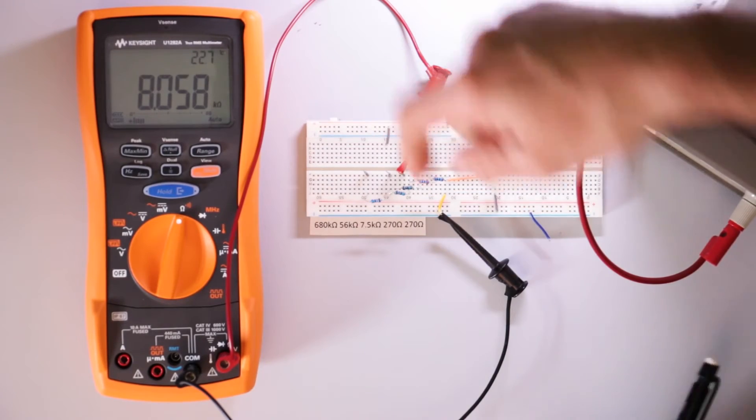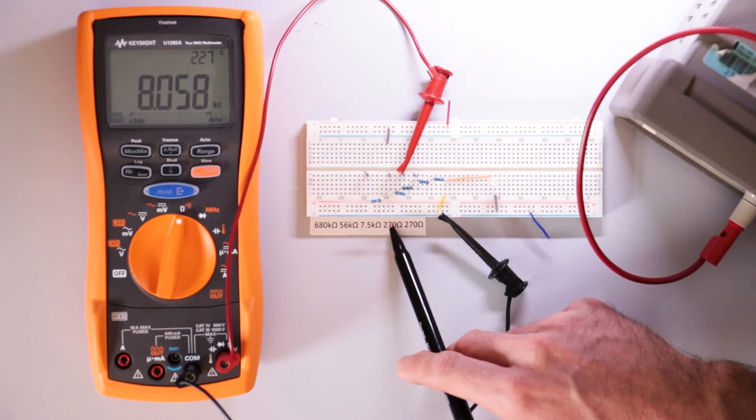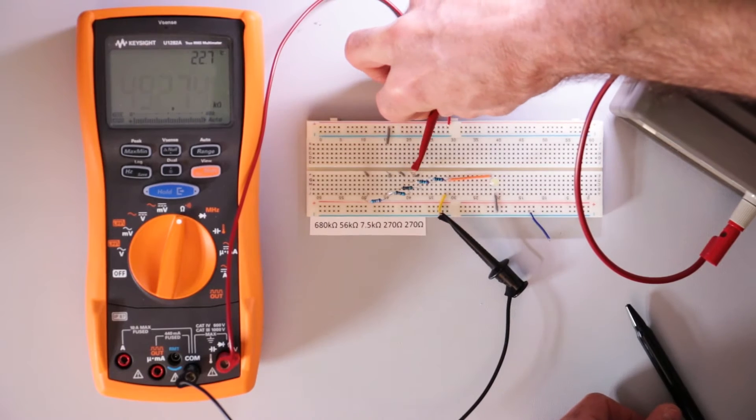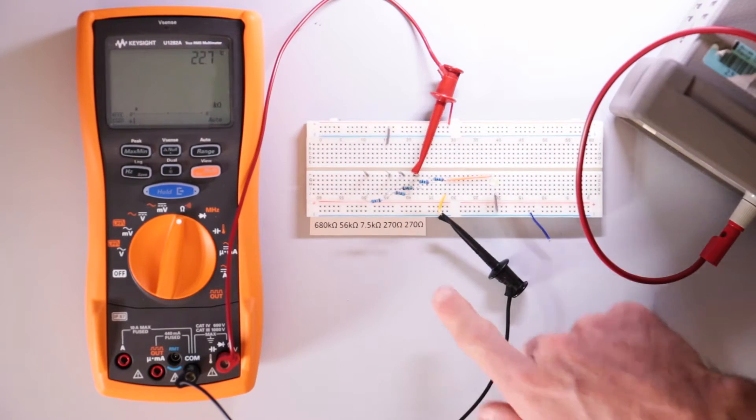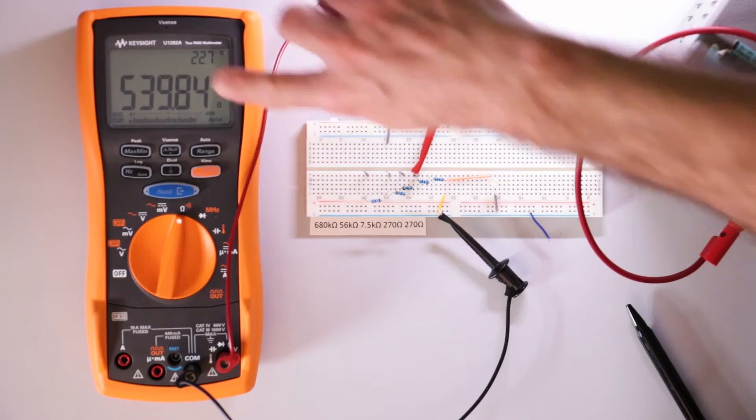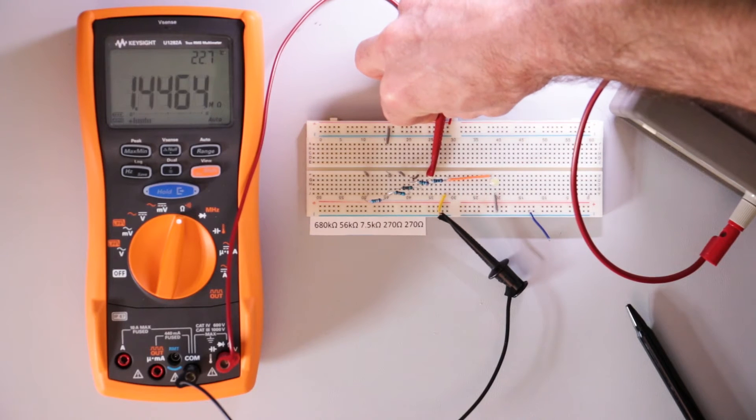And I can move it over one more and now it's about 8 kilohm so it's the 7.5 kilohm summed with the two 270 ohm resistors. And then this guy here is 270 ohm times 2 which is roughly 540 ohms.